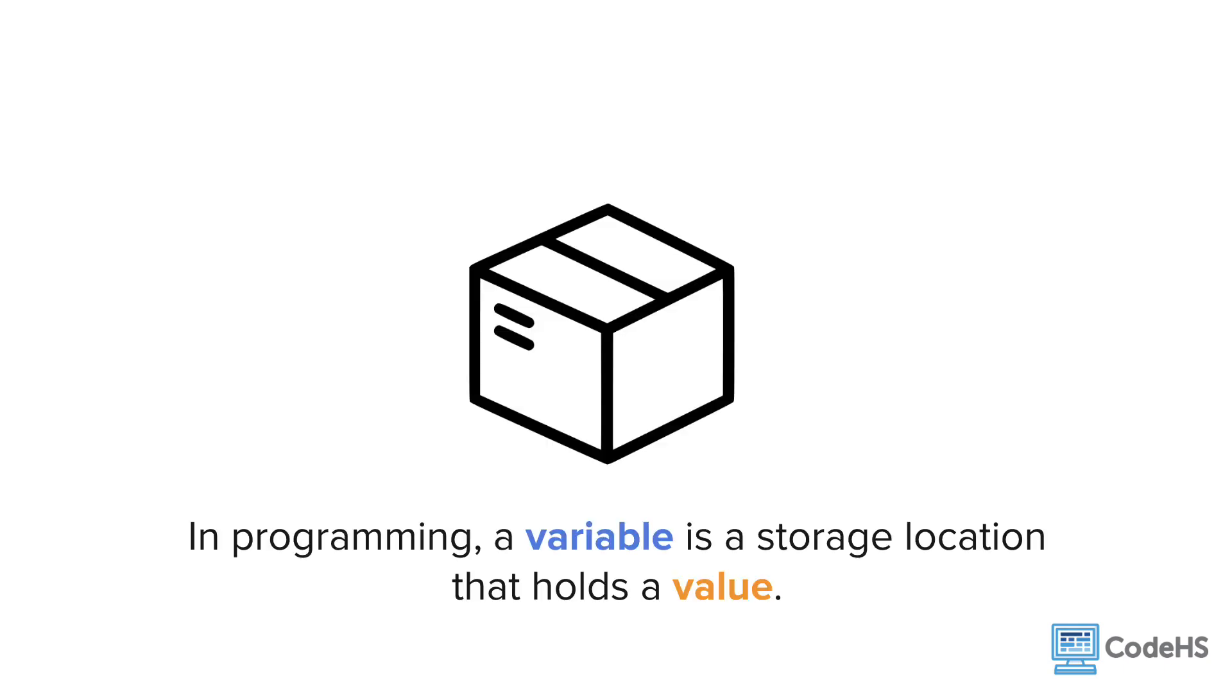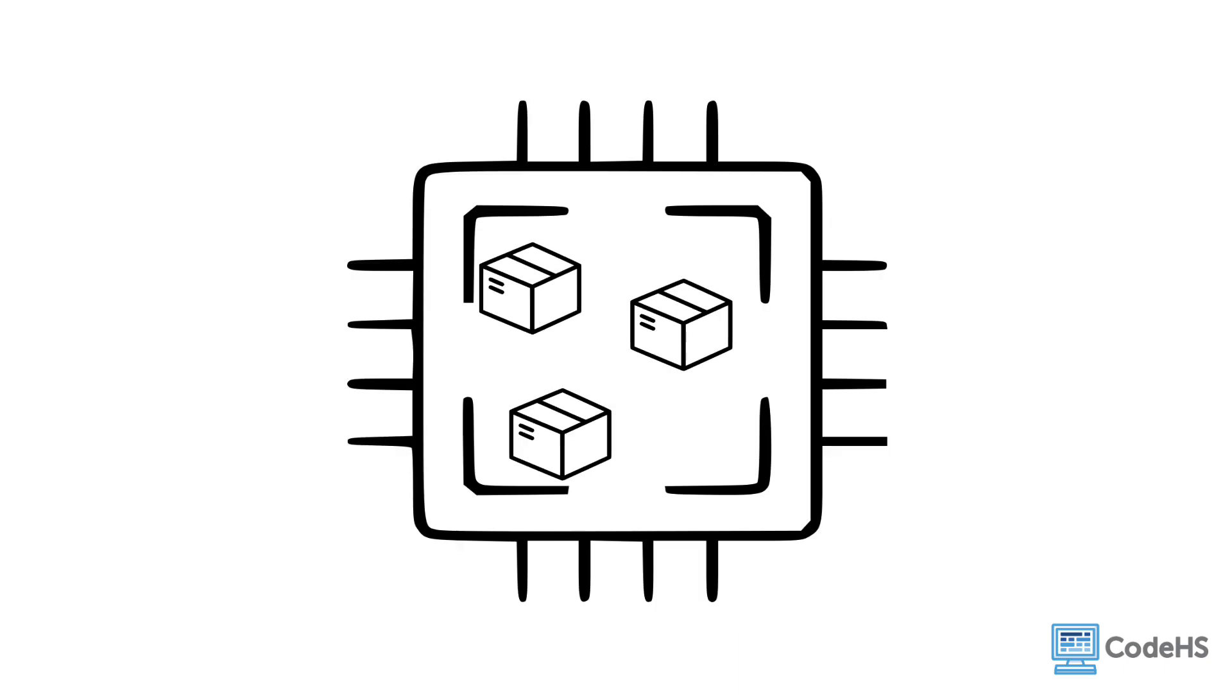While they use the same name, variables in algebra and variables in programming are different. In programming, a variable is a storage location that holds a value. You can think of a variable as a box. A computer allows you to store thousands of variables with a variety of information that you can access and change as the program runs.